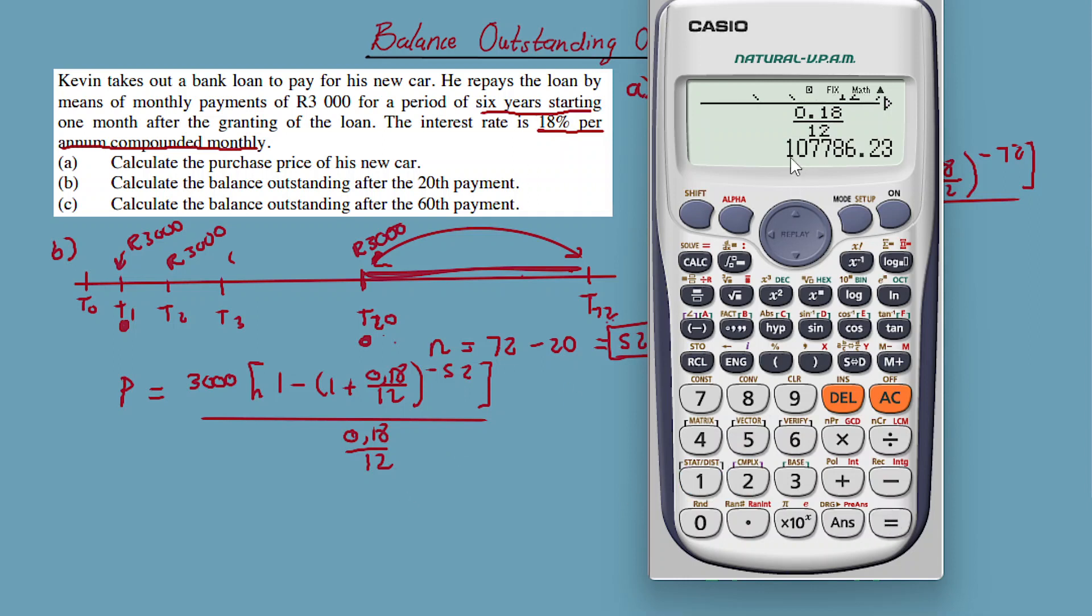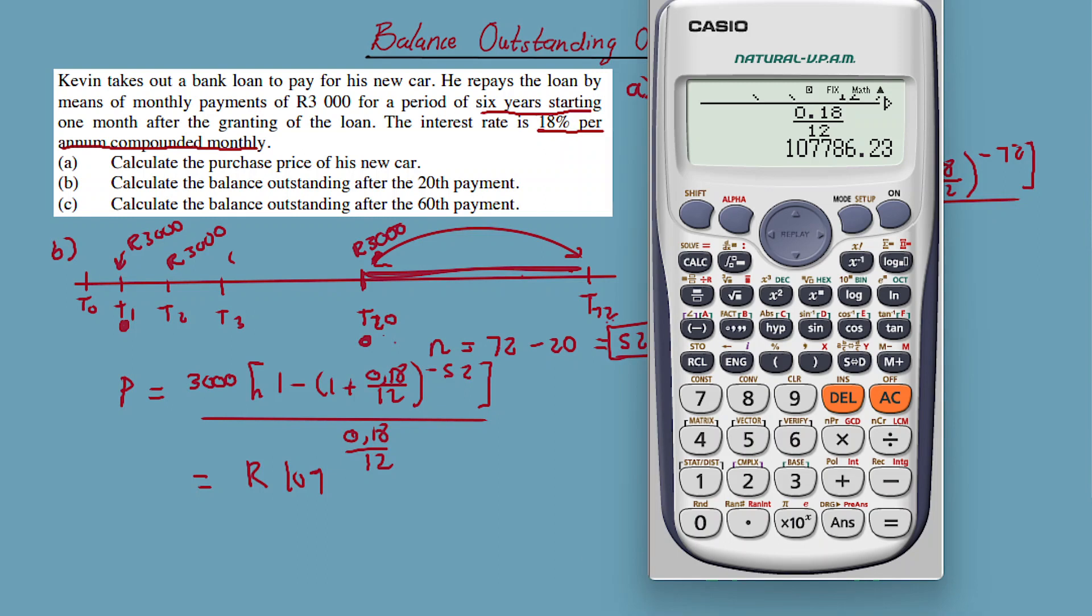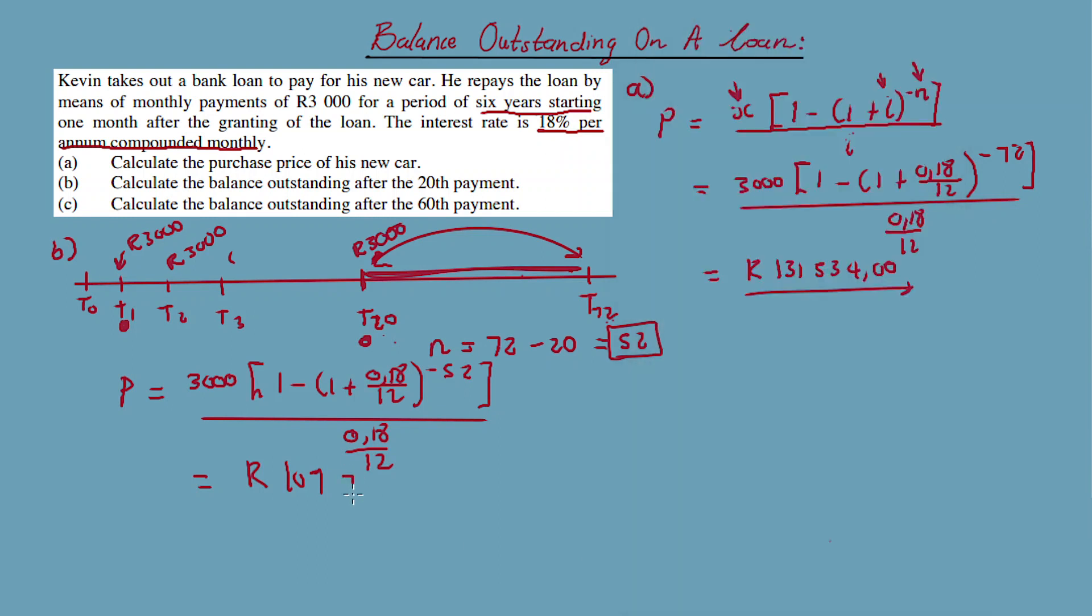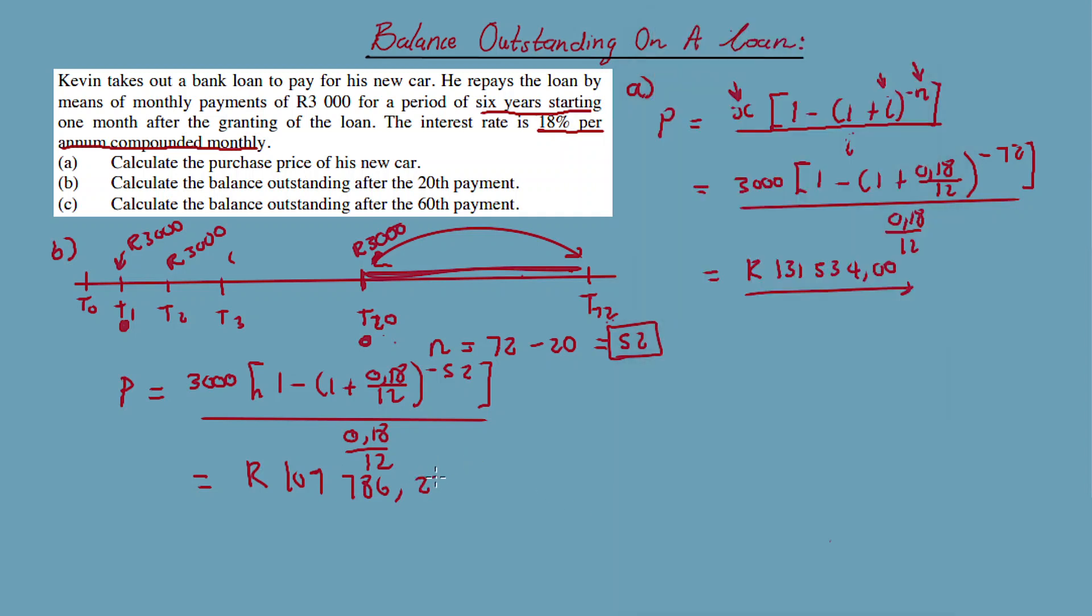So we get 107,786.23. After the 20th payment, we have an outstanding balance of somewhere around 107,786 rand.